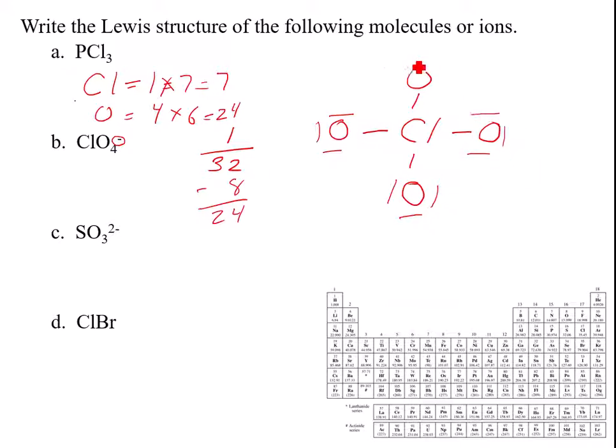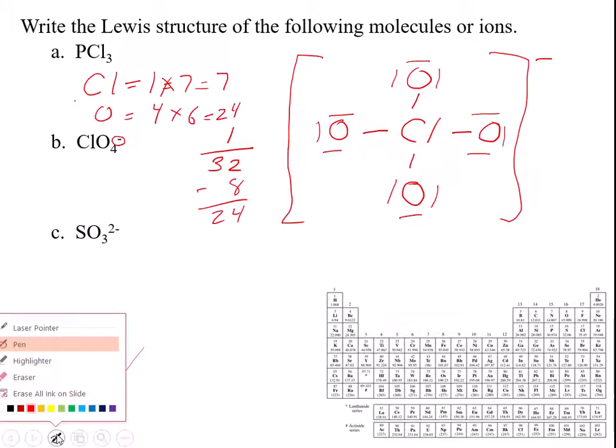So I've used up 24, so I'm down to zero. The only thing is that because this is an ion, I have to indicate the fact that it's an ion by drawing a really large bracket around it and putting the charge outside that bracket.